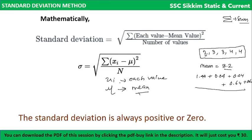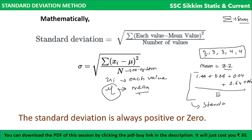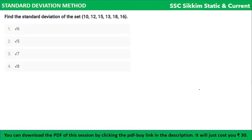The symbol μ (mu) is used for mean. This gives us the standard deviation. This is how we calculate it.